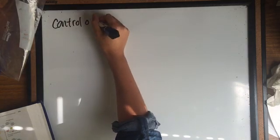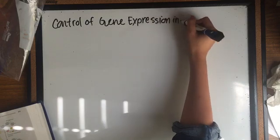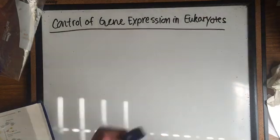Control of gene expression is different in eukaryotic cells and bacterial cells. First, in many bacterial genes, they are organized into operons, which are transcribed in a single RNA molecule.